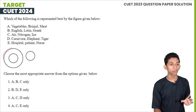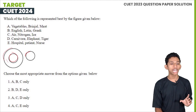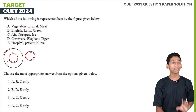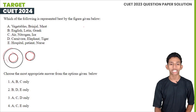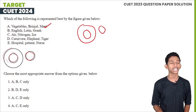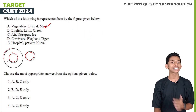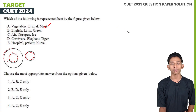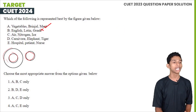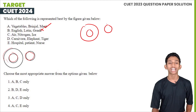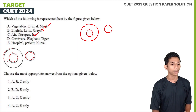If you look at the Venn diagram, you can see a group, a subgroup, and an independent element. The first option is vegetable and brinjal — brinjal is a vegetable. In the second option, a circle with English, Latin, and Greek — that means it is not possible since they are independent. Air, nitrogen, and ice — if you use nitrogen in the air, you can use ice. That's why we can answer it.